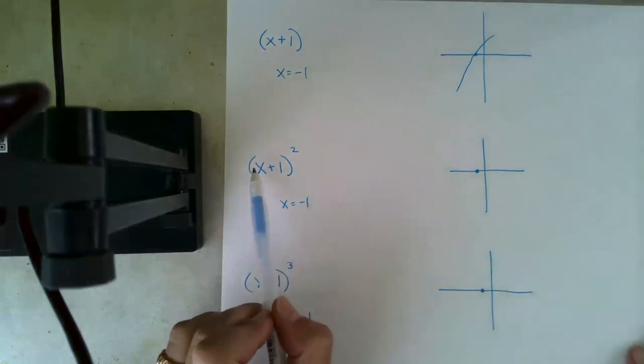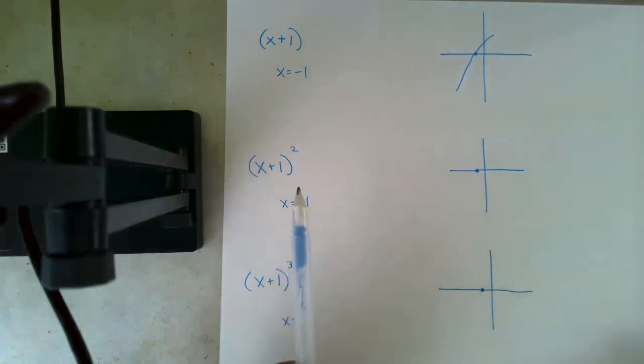Now here, same factor, (x+1), but this time we are squaring it. And so that is considered a multiplicity of two. So when you're looking at a multiplicity of two, or actually any even multiplicity, what will happen?